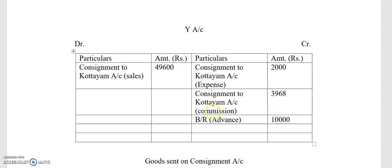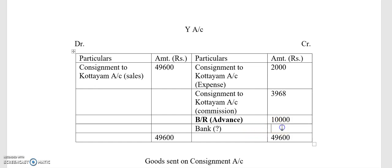The balance of the account is ₹49,600 on the highest side. When you get the balancing figure, you record it as bank. The amount due between X Limited and Y Limited is ₹33,632. The account is now balanced.